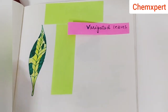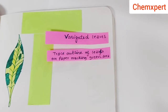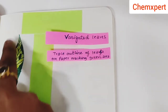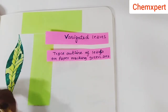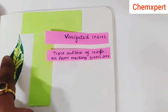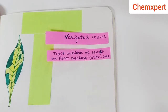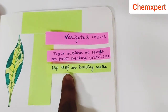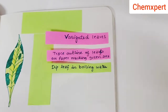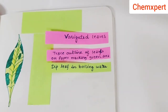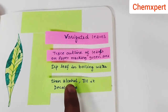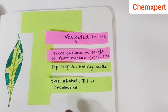Then we pluck the leaf from the potted plant. The next step is to trace the outline of the leaf on a paper, marking the green area. Then we dip the leaf in boiling water for a few minutes, and then dip the leaf in a beaker containing alcohol and heat that solution over a water bath until it decolorizes.